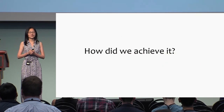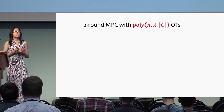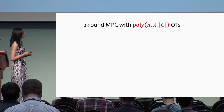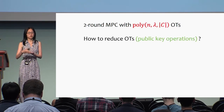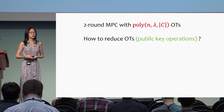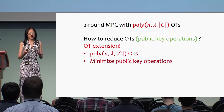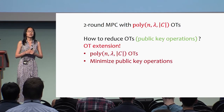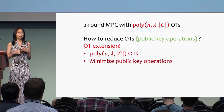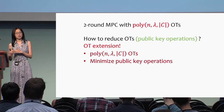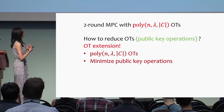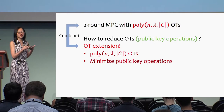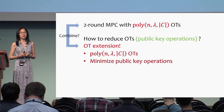How did we achieve it? We have two-round MPC that uses many OTs. How can we reduce the number of OTs or public key operations? A natural idea is to use OT extension. OT extension is intended to do the same number of OTs but with much fewer public key operations — this seems to be exactly what we want. Can we just combine these two primitives to minimize the public key operations in MPC?